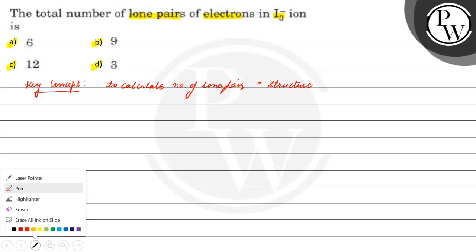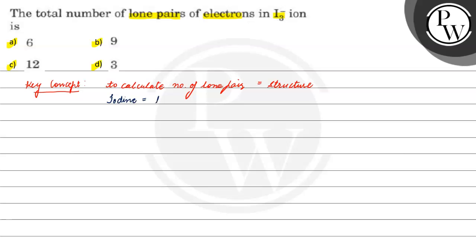So let's start with the structure. As we know, iodine is a halogen, which means there are seven valence electrons in the outer shell. There are three I's.